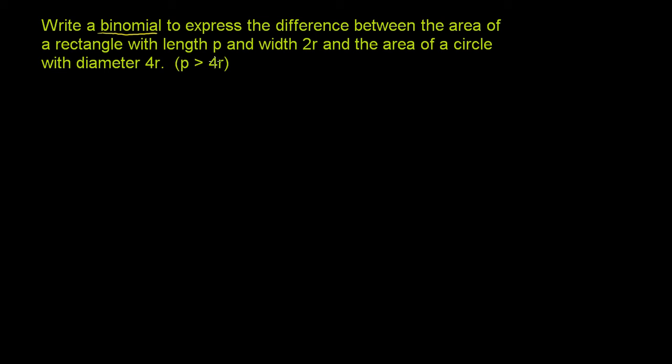To do this, you pretty much have to write a binomial. They want us to express the difference between the area of a rectangle with length p and width 2r and the area of a circle with diameter 4r. Let's think about each of these independently.